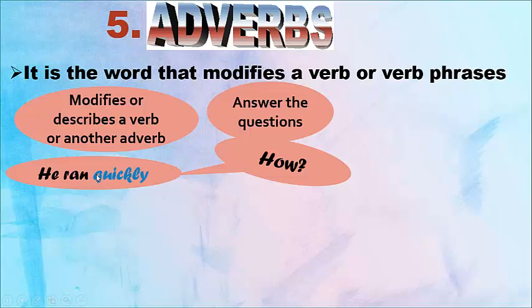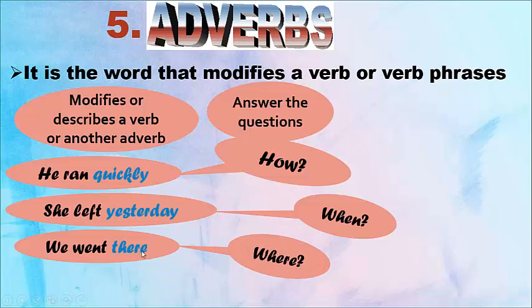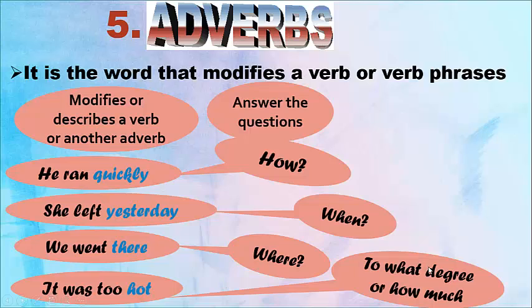'She left yesterday' shows when - yesterday was the time she left. 'We went there' - there shows where they actually went. 'It was too hot' - hot shows the degree or how much.